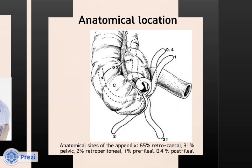Appendicitis may present atypically when it has an unusual anatomical location. It usually hangs freely in the retrocaecal fossa. Diagnostically important variants include a pelvic appendix giving urinary symptoms, or a retro-ileal appendix giving ureteric or testicular irritation.